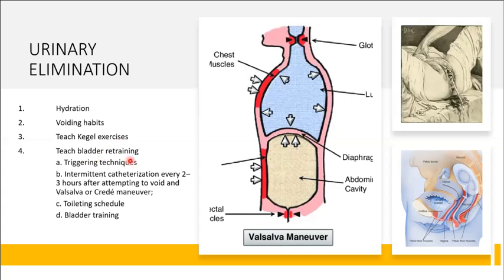Bladder retraining gradually increases the interval between bathroom visits. Also teach triggering techniques to stimulate voiding — for example, stroking the medial aspect of the thigh, pinching the area above the groin, pulling on pubic hairs, or providing digital anal stimulation (typically used with upper motor neuron problems).